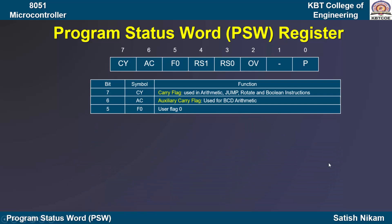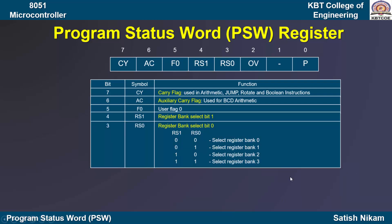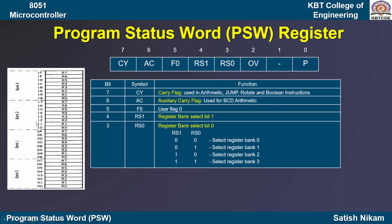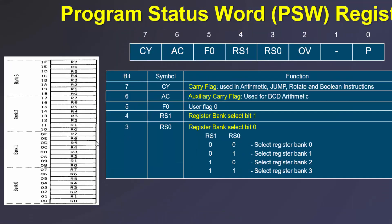The fifth bit is the user flag. We can use this flag to store single-bit information. The fourth bit and the third bit are RS1 and RS0, which indicate register bank selection bits 1 and 0. They are used for the selection of the bank. As we know, there are four banks in the RAM of the 8051 microcontroller: bank 0, bank 1, bank 2, and bank 3. The user can use RS1 and RS0 bits to select these banks.